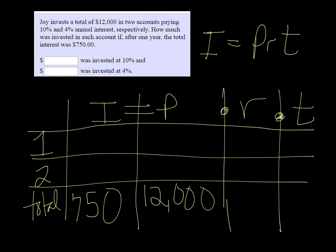The rate for one of them was 10% or .10, and the other one was .04 or 4%. And this is a year for both of them, so we just put one year, the total time for both of them. It's just one.